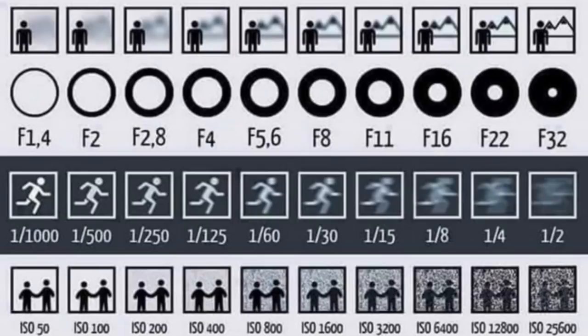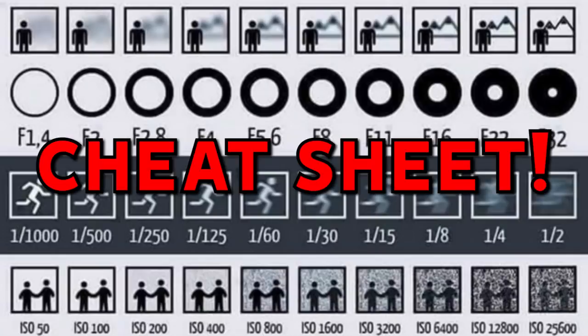So you get it — the relationship between aperture, shutter speed, and ISO. Depending on the scene, you need to adjust the parameters accordingly.